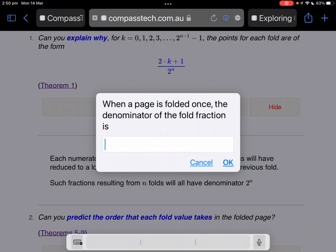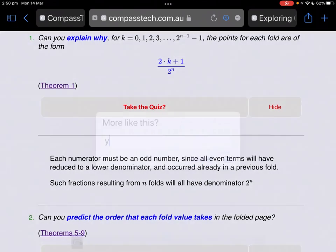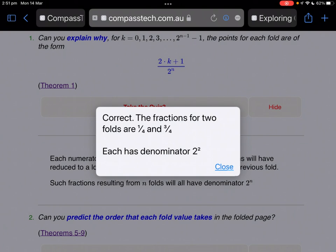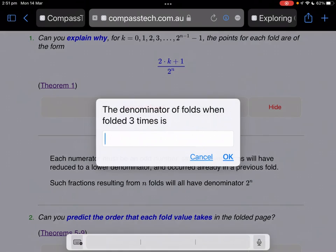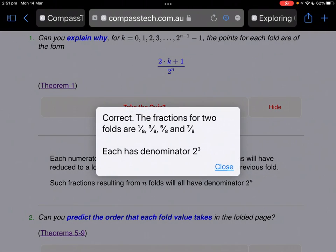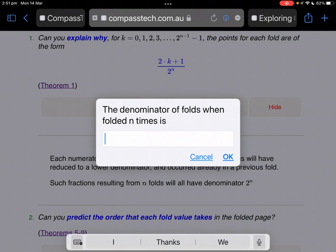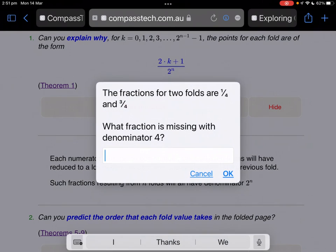When a page is folded once, the denominator of the fold fraction is clearly going to be 2. Denominator folding 2 times, that'll be 4. And we can continue. What about folding n times? 2 to the power of n will be the number of folds after n folds.